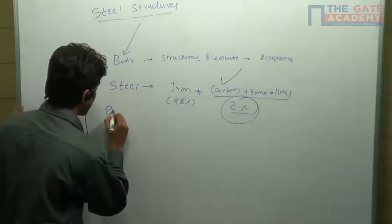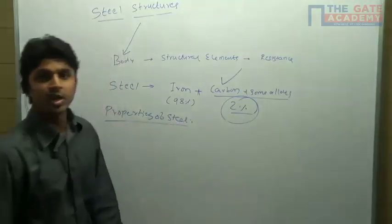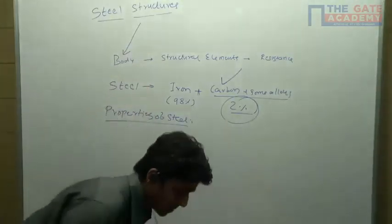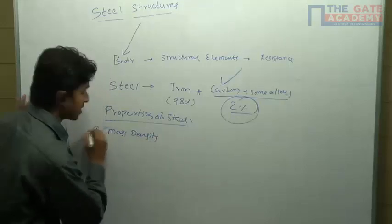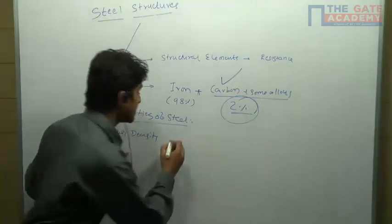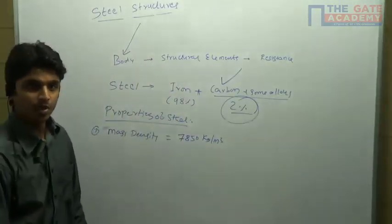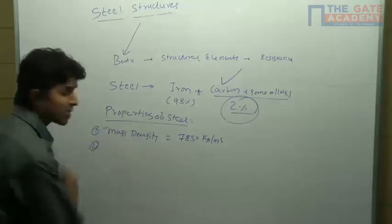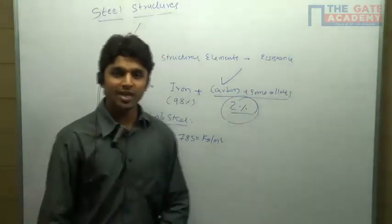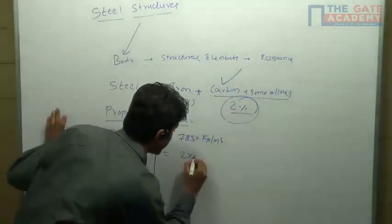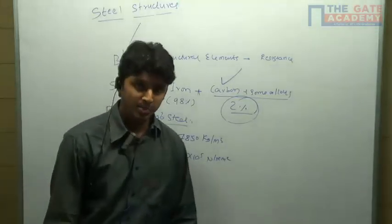So now, what are the properties of the steel? The main properties of the steel are: the first one is mass density. The mass density of the steel is 7850 kg per meter cube. The second one is Young's modulus, or modulus of elasticity of the steel, that is 2 into 10 raised to 5 Newton per mm square.